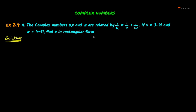We have the values of V and W, and we need to find U in rectangular form. We will use the equation 1/U = 1/V + 1/W.